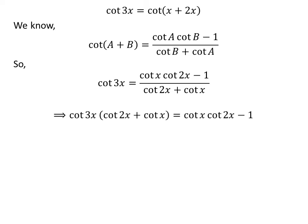Shifting cotangent of 2x plus cotangent of x from the denominator on the right-hand side to the left-hand side gives us: cotangent of 3x times cotangent of 2x plus cotangent of x is equal to cotangent of x times cotangent of 2x minus 1.